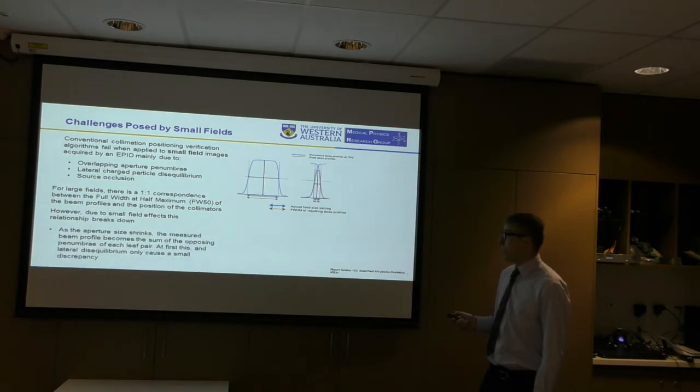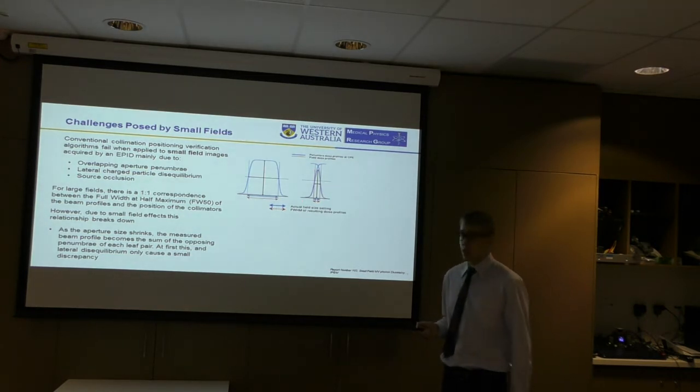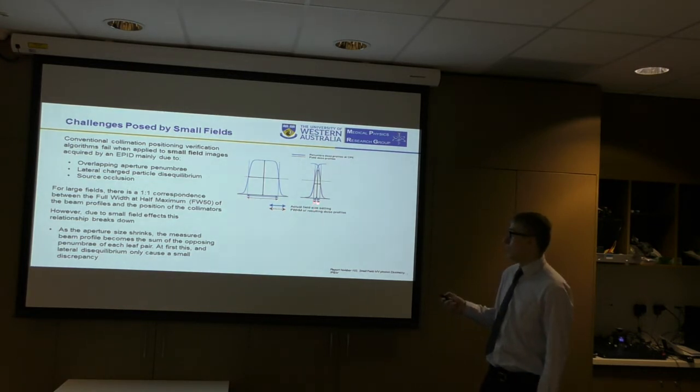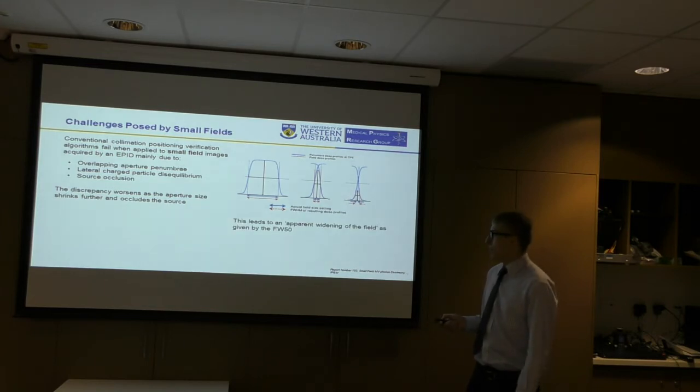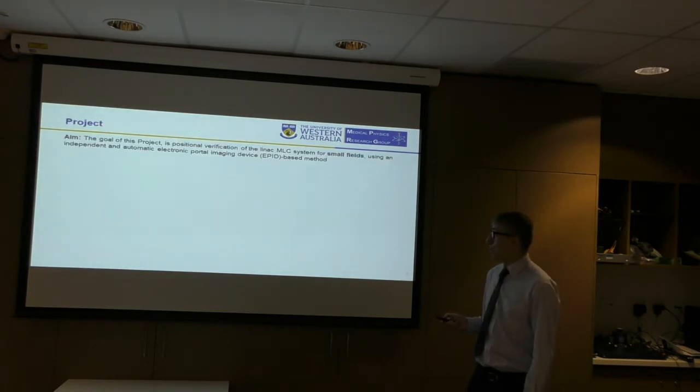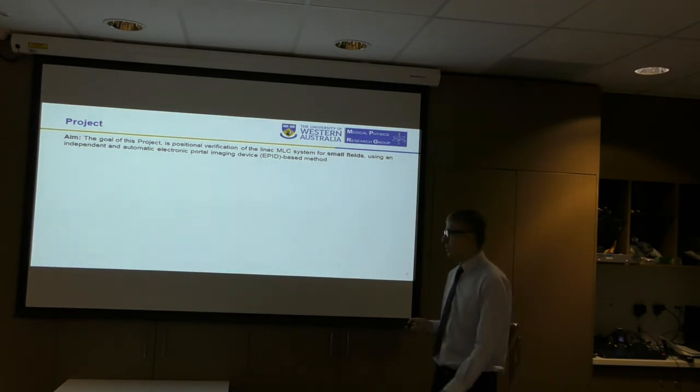As the aperture size shrinks, the measured beam profile becomes the sum of overlapping penumbra of each leaf pair. At first, this and lateral disequilibrium effects only cause a small discrepancy between the full width at half maximum and the actual position of the MLCs. However, the discrepancy worsens as the aperture size shrinks further and source occlusion occurs. The small field effects lead to an apparent widening of the field as given by the full width at half maximum.